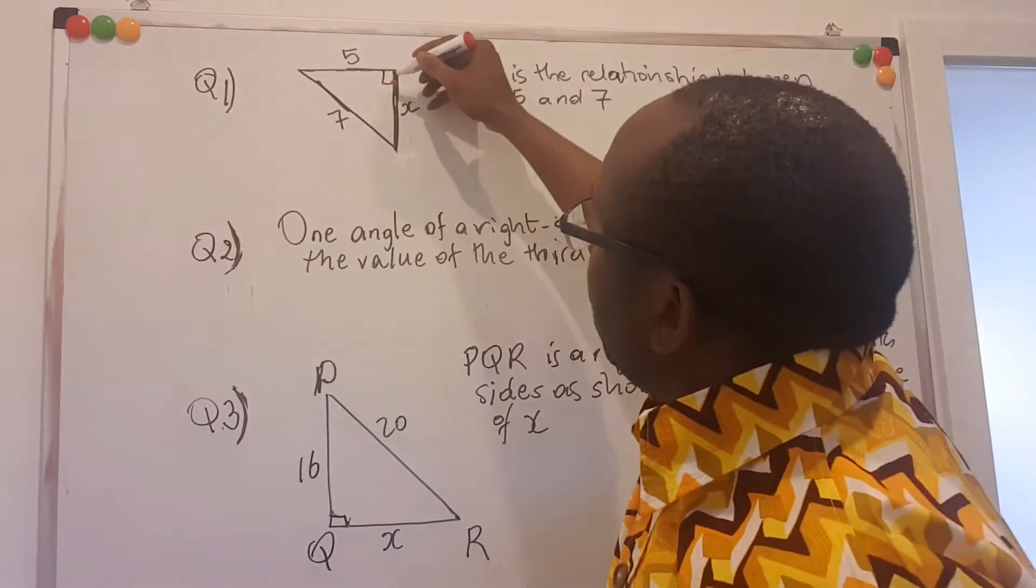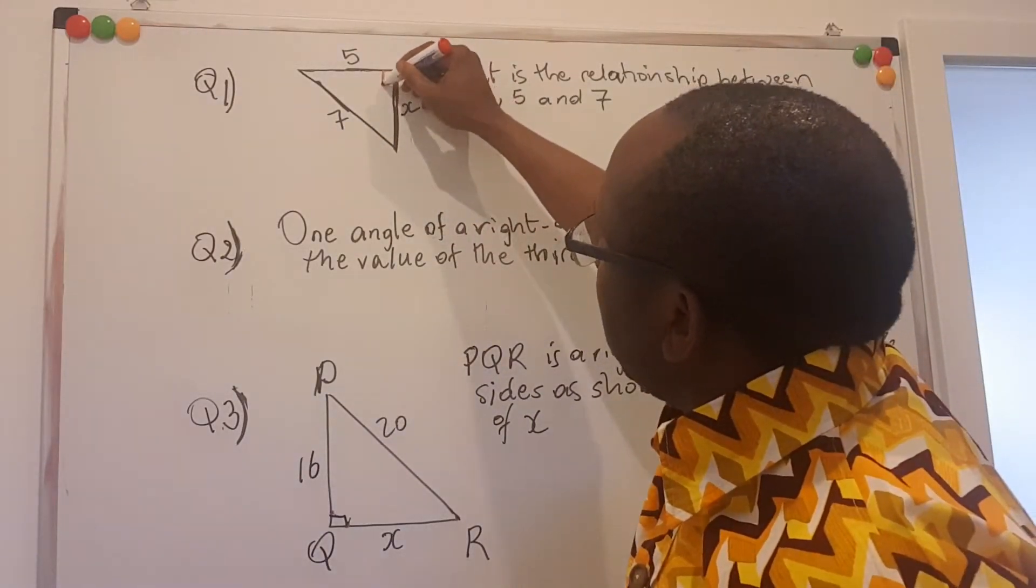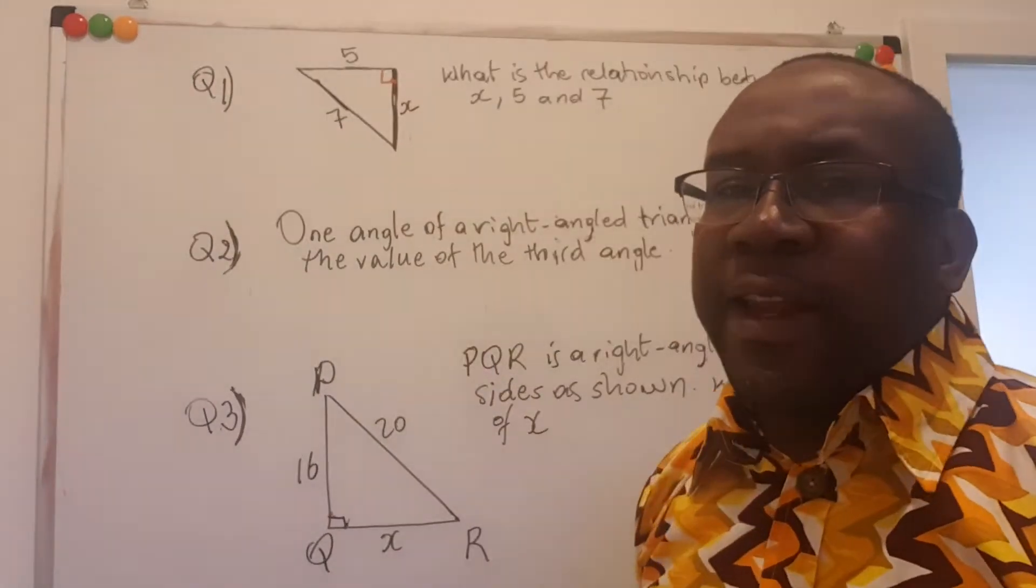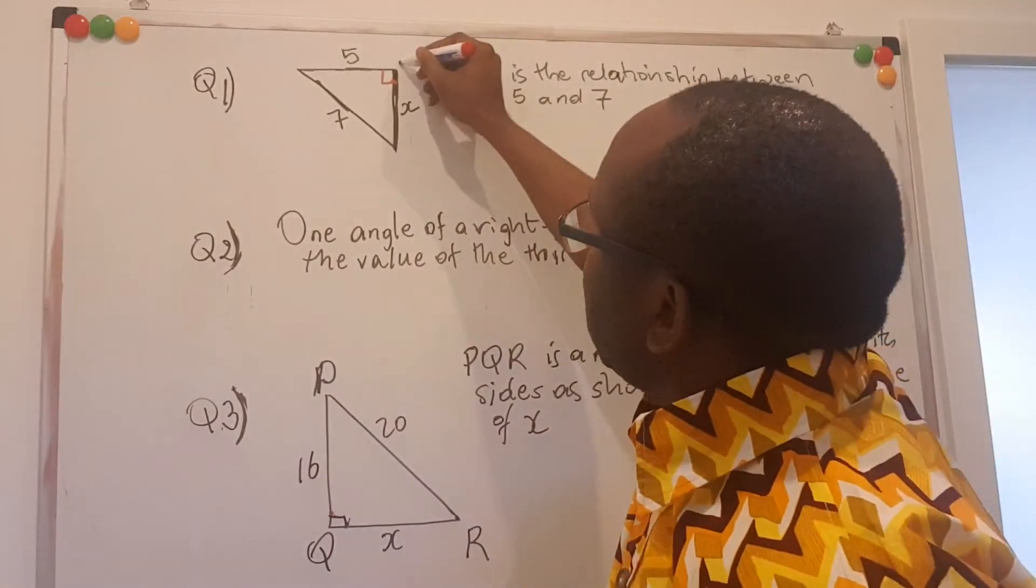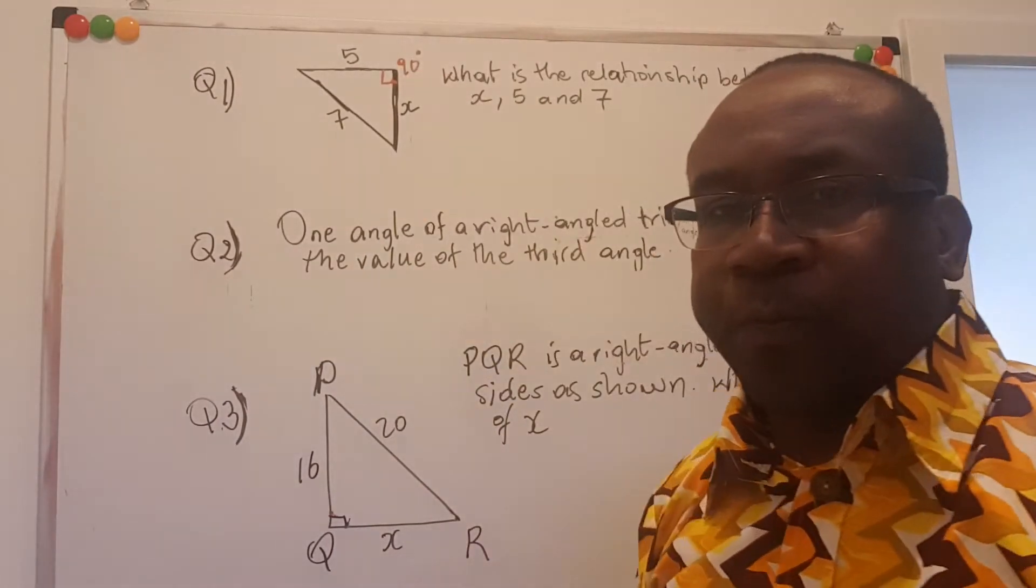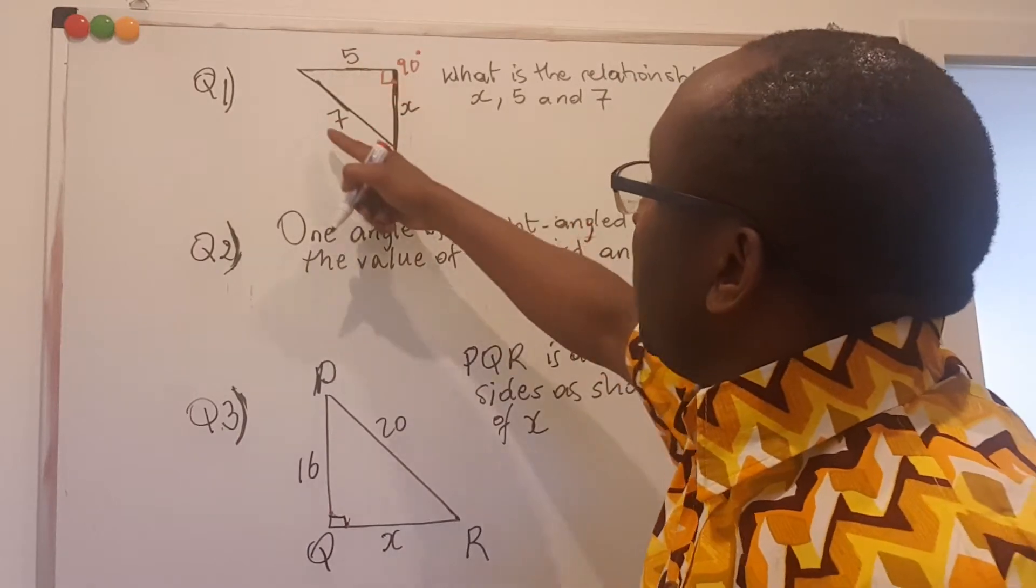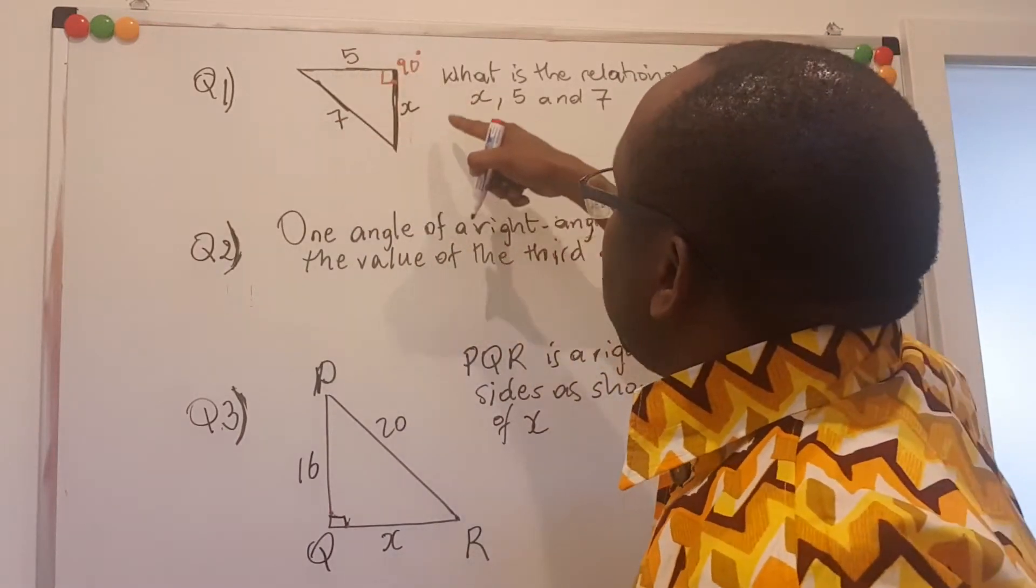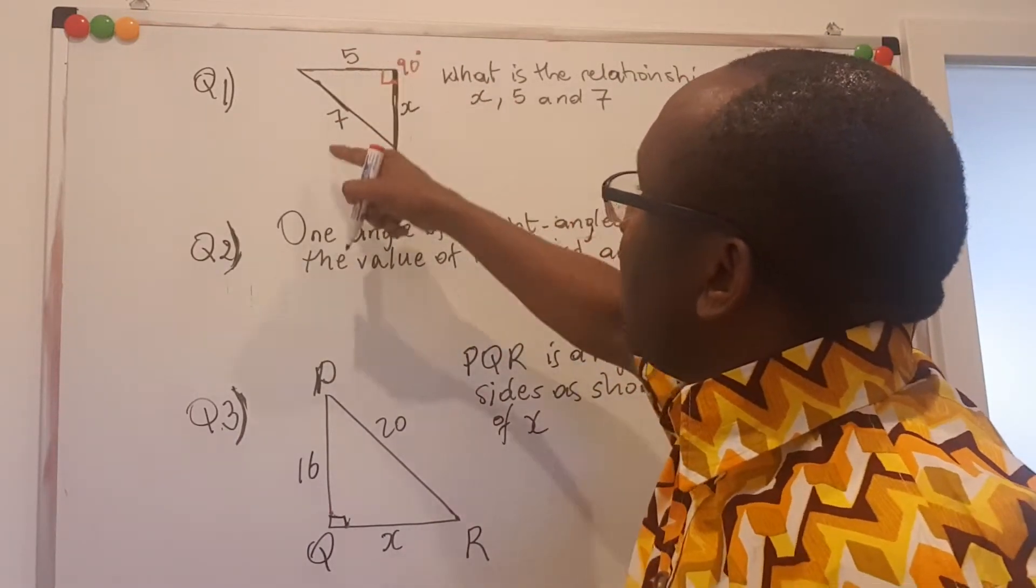If you look at the figure well, you see a symbol here. This is the symbol of a right angle. A right angle means the angle is 90 degrees. And we are asked to look for the relationship between the sides there, among the sides X, 5 and 7.